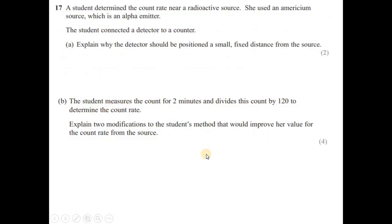Question number 17, a student determined the count rate near a radioactive source. She used an americium source, which is an alpha emitter. The student connected a detector to a counter. Explain why detectors should be positioned small fixed distance from the source. So this distance should be small. The reason is because alpha particles have very small range in air. So it is possible that alpha particles after emission cannot reach to the detector. So distance should be small and it should be fixed because the count rate depends on the distance. If you change the distance, then count rate will be varied.